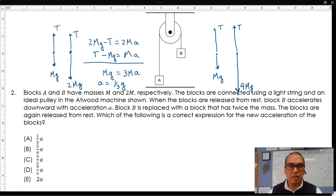What we have then is 4MG minus the tension is equal to 4MA. Tension minus MG is equal to MA, which means 3MG is equal to 5MA.